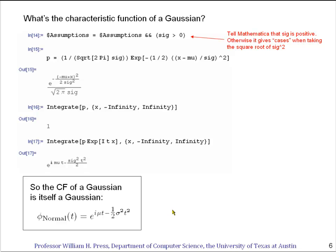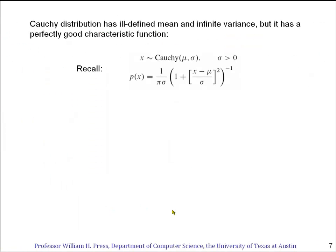What's the characteristic function of the Cauchy distribution? You'll recall that the Cauchy distribution is the example that we always like to use as a problem child, because it doesn't even have a mean or a variance. But it has a perfectly good characteristic function, as we'll see.